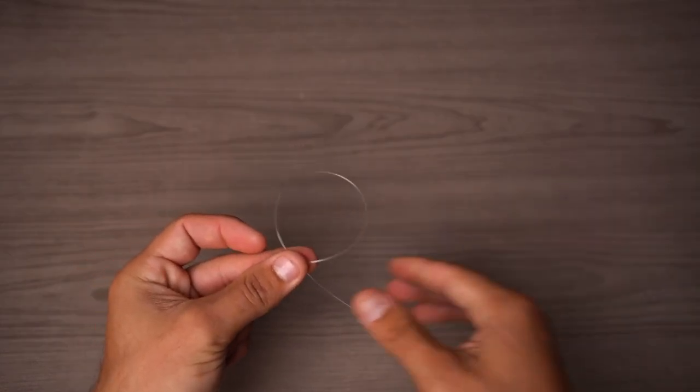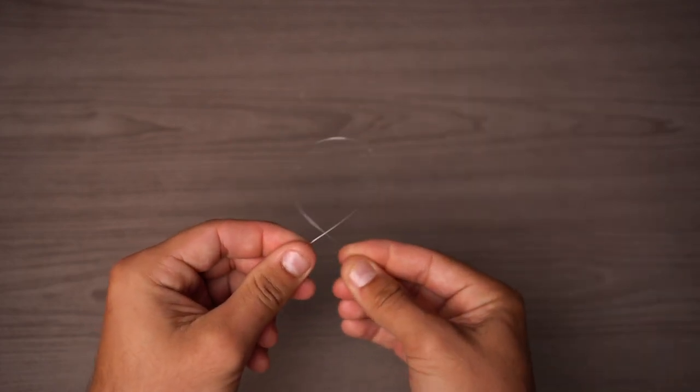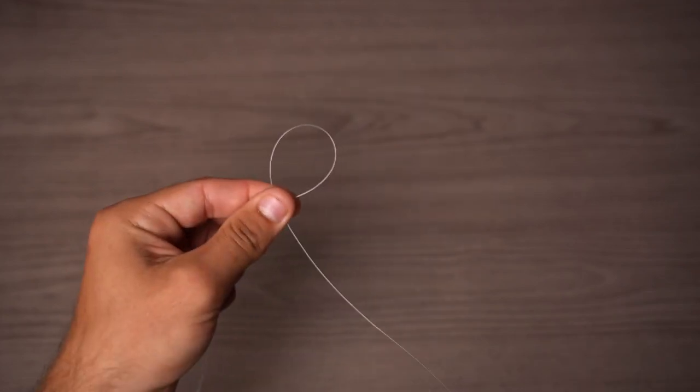So just kind of roll your fingers. As you can see, this tag end is behind the standing line. So we have a loop in our left hand, just pinching that loop.